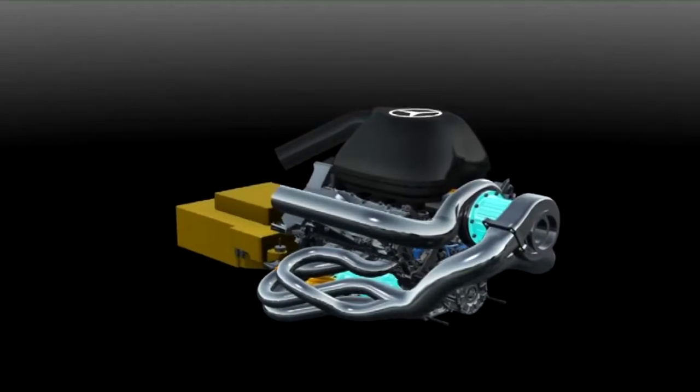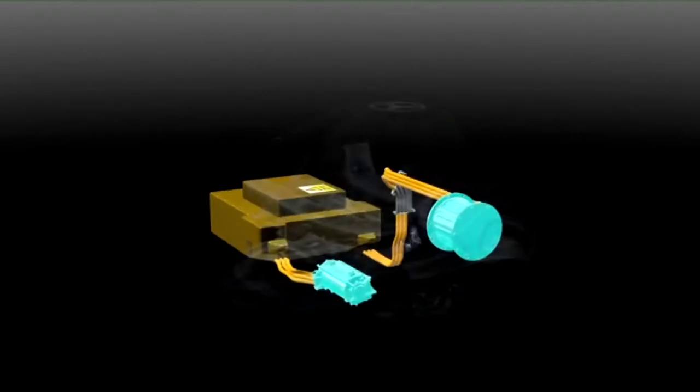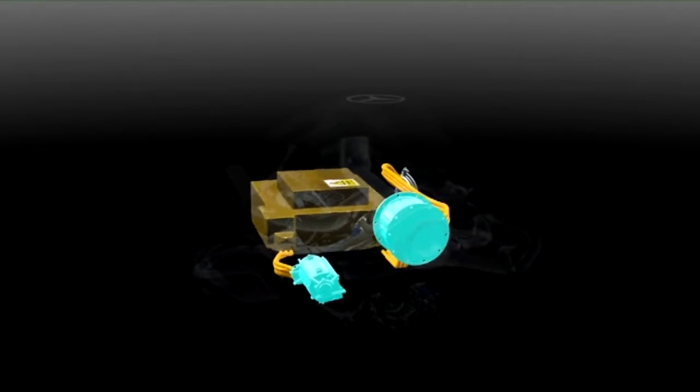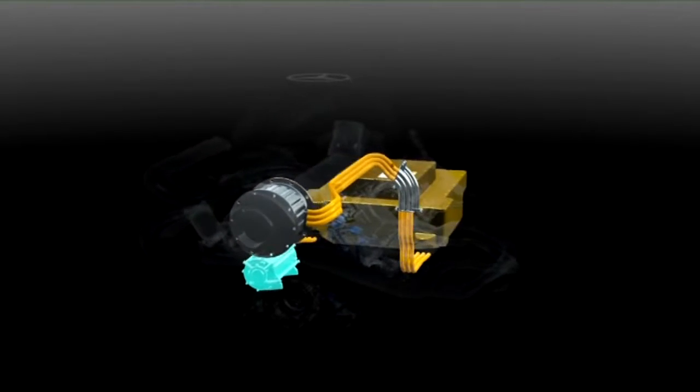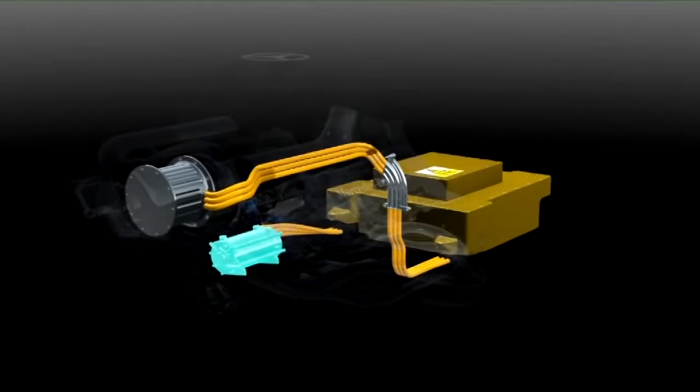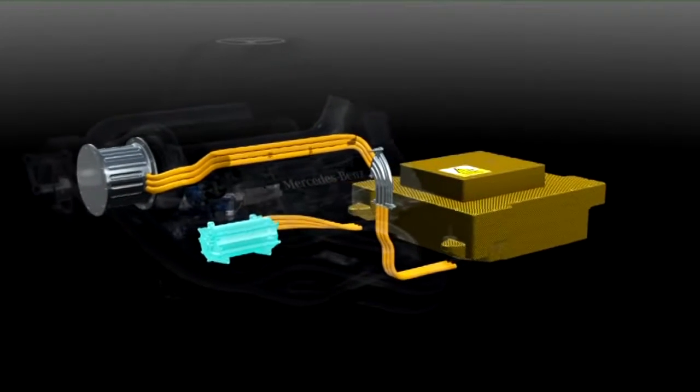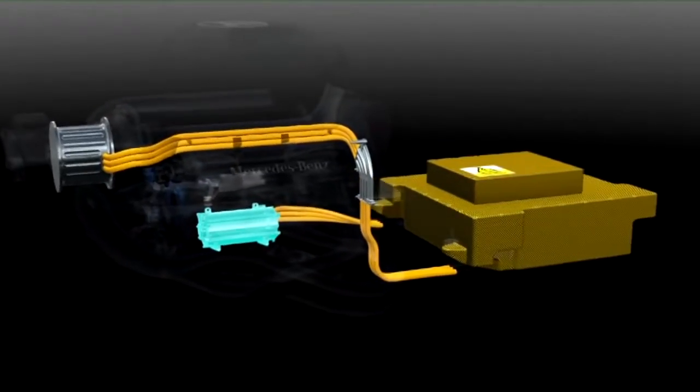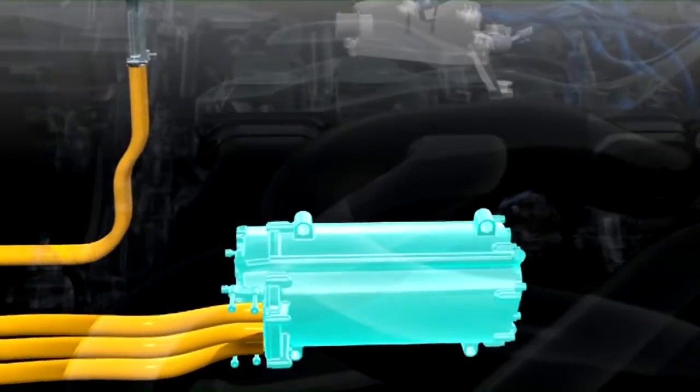The engine is boosted by a hybrid system made up of two electrical motor generators to recycle energy that would otherwise be lost. The MGU-K delivers up to 160 horsepower for 33 seconds per lap, equivalent to a Mercedes C220 CDI.